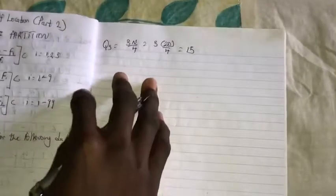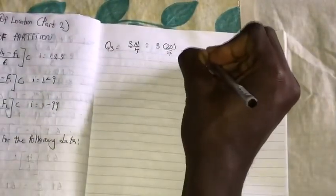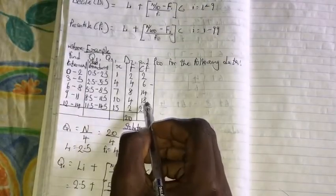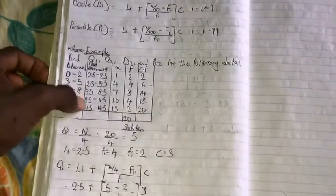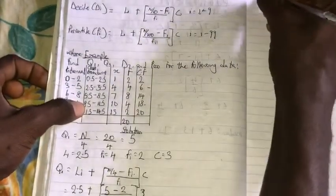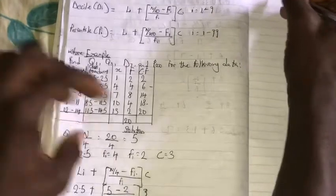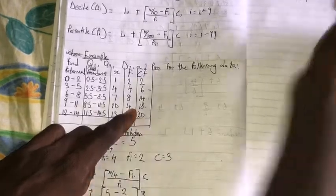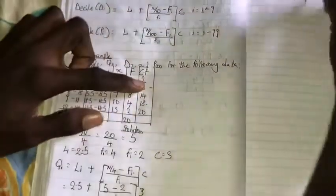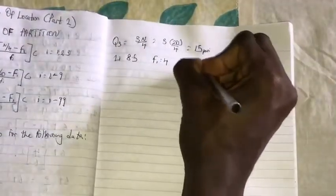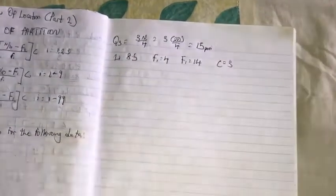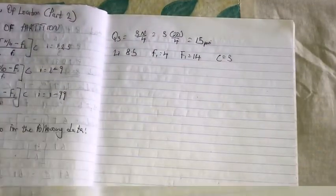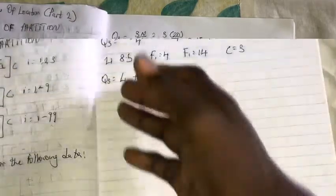So our Q3 is 15th position. Therefore you come back here, 15 falls under this, so our class boundary here is, you write your Li, 8.5. Our frequency there is 4. Frequency there is 4, our cumulative frequency before is 14. Our cumulative frequency is 14, then our class size still remains 3.